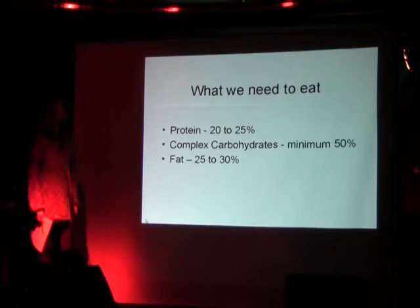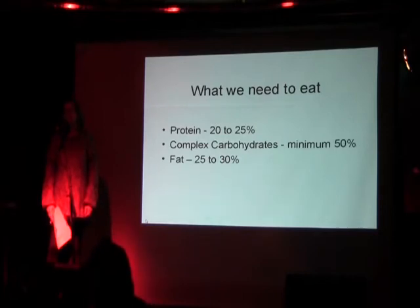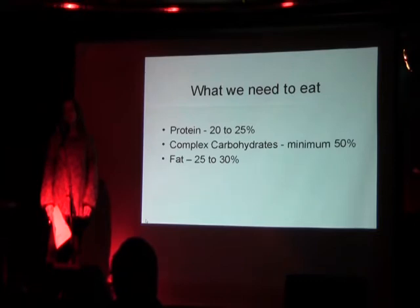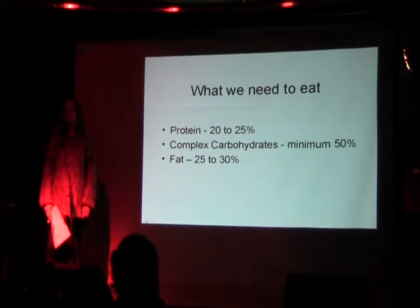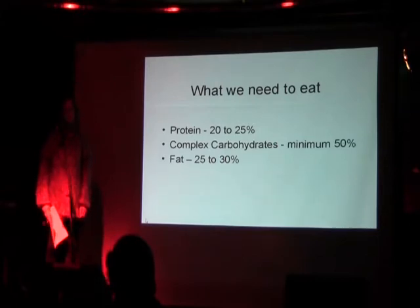Health starts off with what we need to eat. Approximately 20 to 25% of our diet in calories should be protein, about 25 to 30% fat, and at least 50% should be complex carbohydrates — by that I mean vegetable matter. Over half your diet, I think even 70%, should be raw vegetables, especially greens, raw and lightly steamed.